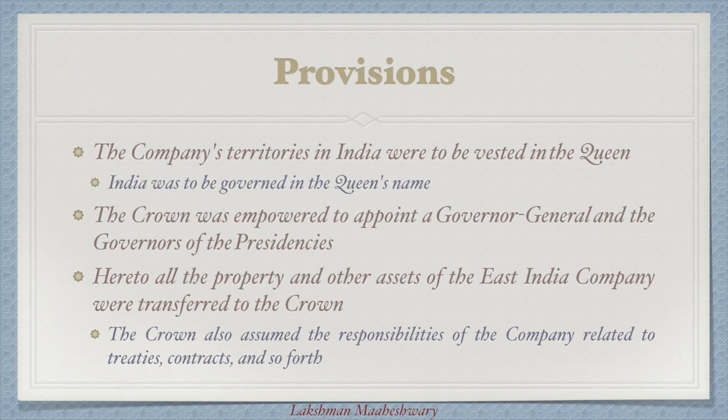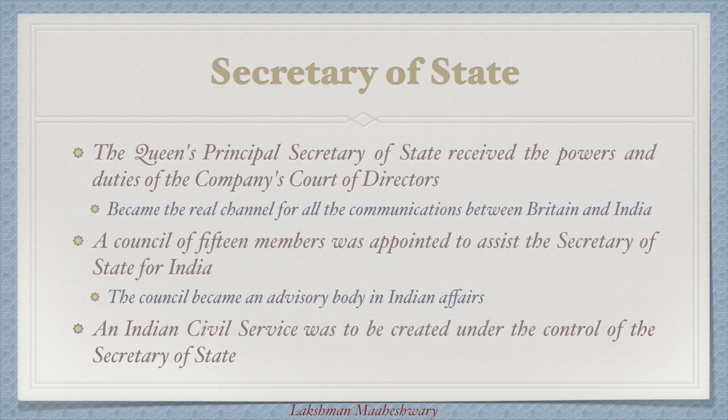Now let us talk about the provisions of this Act. The company's territories in India were to be vested in the Queen. India was to be governed in the Queen's name. The Crown was empowered to appoint a Governor-General and the Governors of the Presidencies. All the property and other assets of the East India Company were transferred to the Crown. The Crown also assumed the responsibilities of the company related to treaties, contracts and so forth.